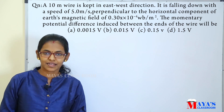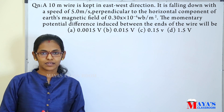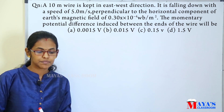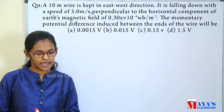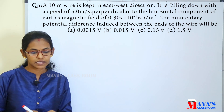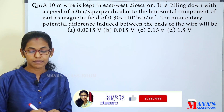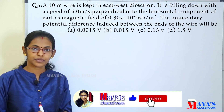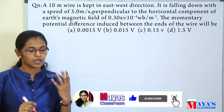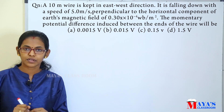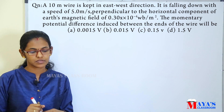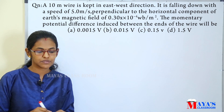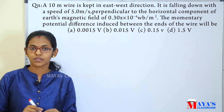Welcome to our question. A 10 meter wire is kept in east-west direction. It is falling down with a speed of 5 meter per second perpendicular to the horizontal component of Earth's magnetic field of 0.3 into 10 raise to minus 4 Weber per meter square. What is the momentary potential difference induced between the ends of the wire?